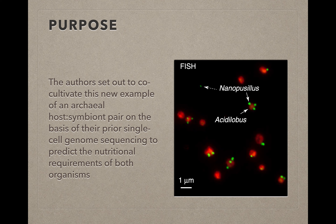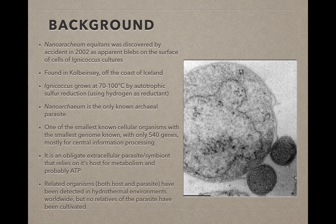The purpose of this paper is that the authors set out to co-cultivate a new example of a host-symbiont pair on the basis of previous single-cell genome sequencing, predicting the nutritional requirements of both organisms. So in terms of background, Nanoarchaeum equitans was the first — and before this paper, only — archaeoparasite that had been isolated. It was isolated by accident in 2002, appearing as blebs in an Ignococcus culture isolated from the Kolbeinsey Ridge off the coast of Iceland. This EM picture shows that the large, normal archaeal-looking cell is Ignococcus — you can even see the nucleoid separated from the cytoplasm — and the two blebs on the lower right are the symbiont or parasite, Nanoarchaeum equitans.